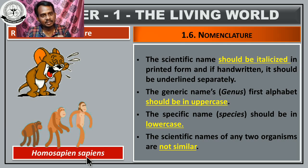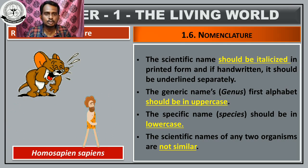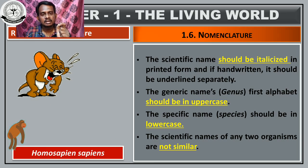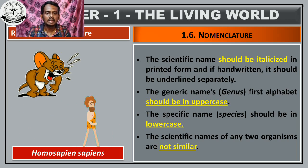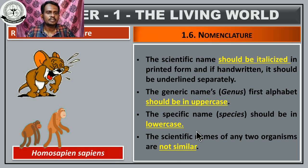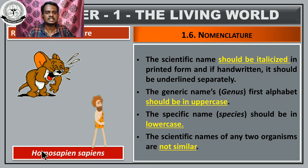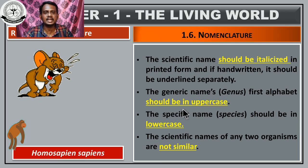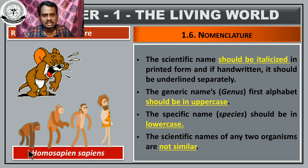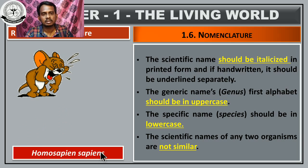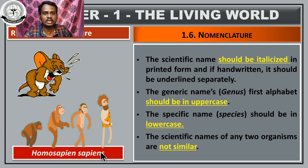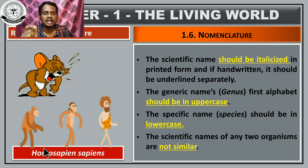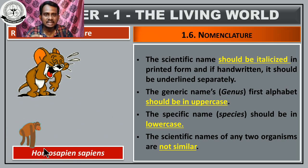The generic name should be underlined separately. That means you have to separately underline the genus name as well as the species name. The second rule is that the generic name — meaning the genus name — should have the first alphabet in uppercase, i.e., start with a capital letter. The species name should start with a lowercase letter.